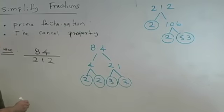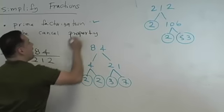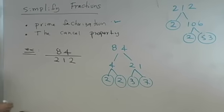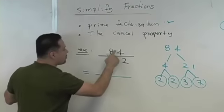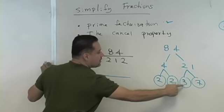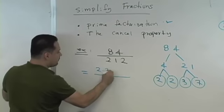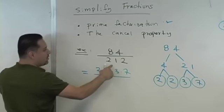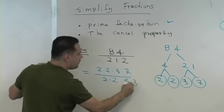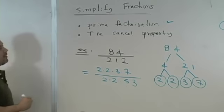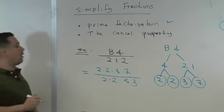So now that you have the prime factorization done, what do you do with that? Here's what you're going to do. You're going to replace 84 in your fraction with 2 times 2 times 3 times 7. You're going to replace 212 with 2 times 2 times 53. You guys okay with that?